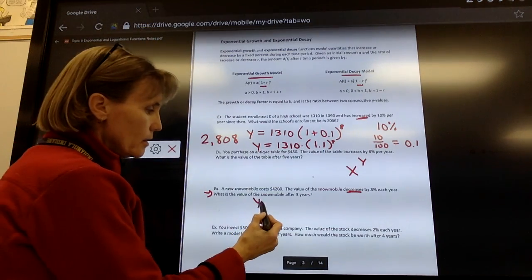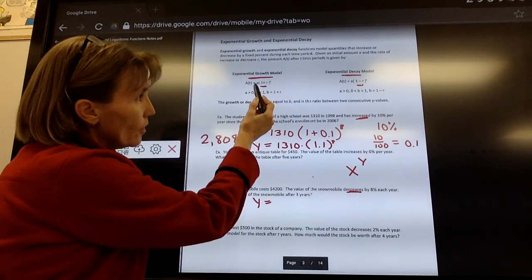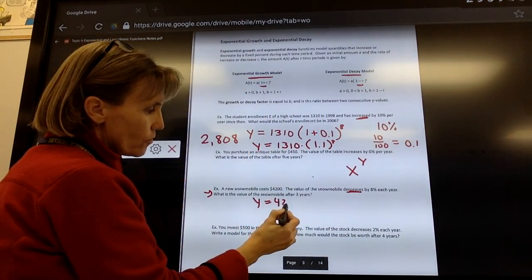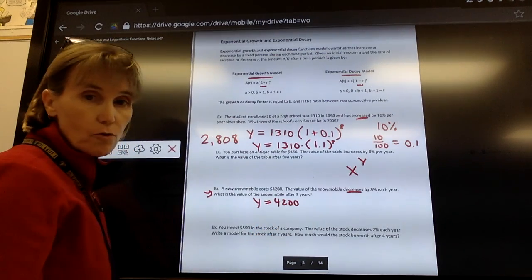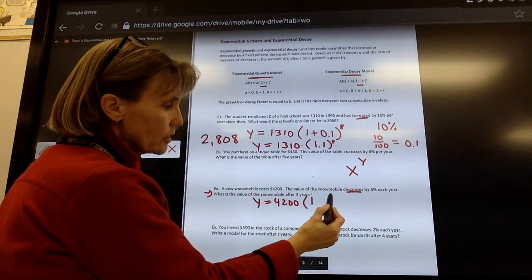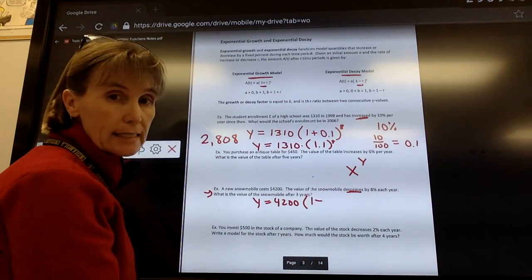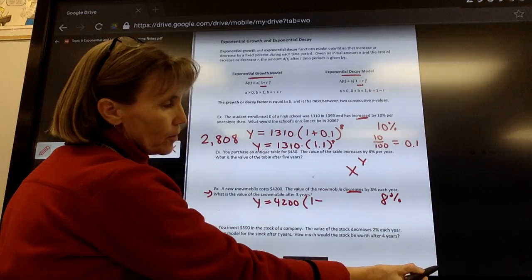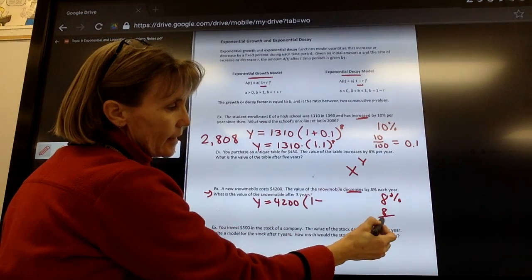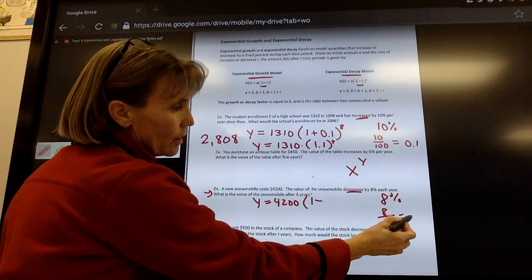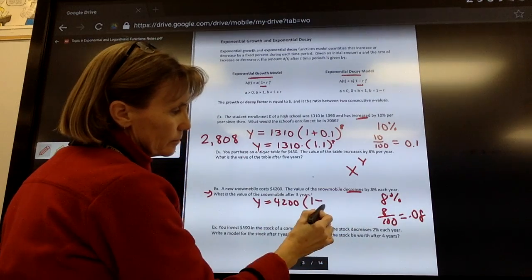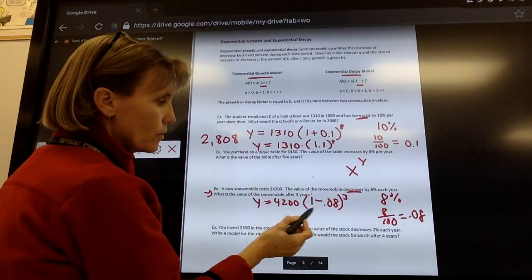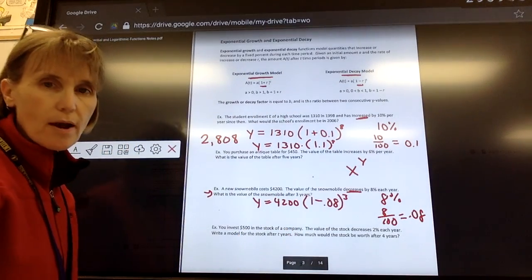So I'm going to use Y again equals that original A value, which is your initial value, in this case $4,200. Because it's decreasing or it's decay, it's 1 minus, and the rate is 8%. If I want to put 8 as a decimal, I have to take 8 and divide it by 100, we get 0.08. And I'm going to raise it to the third power in this case because they want to know the value after three years.